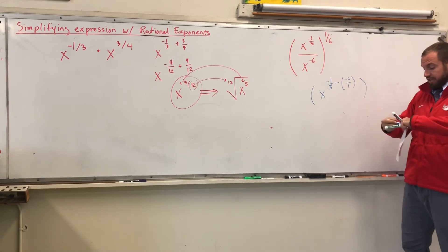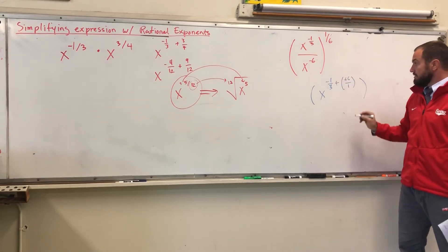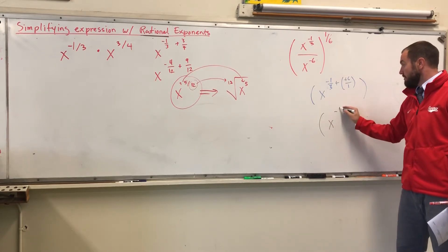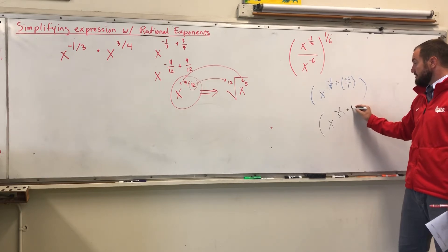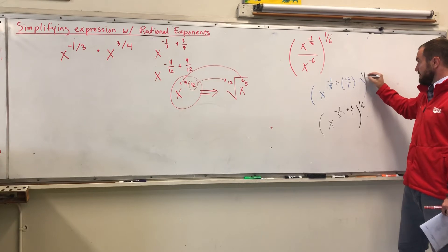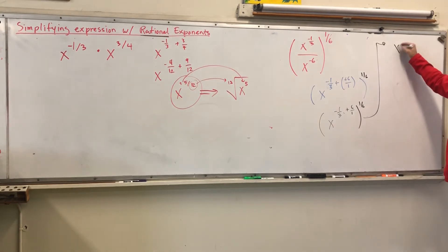Now, our negative negative is going to give us a positive. So I can look at x to the negative one-third plus six over one, and still raised to the one-sixth power. Let's not forget about it. Let's find a common denominator here. Yeah, this would just be three, this is a denominator, right? So this stays negative one-third, and this changes to 18 over three, which gives me bigger numbers positive, 17 over three here. So x to the 17-third raised to the one-sixth power.